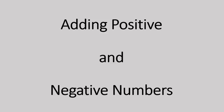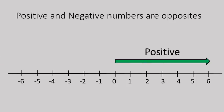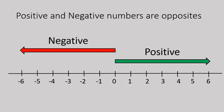Hello, this is Mr. Buffington, and in this lesson we are going to talk about adding positive and negative numbers. Positive and negative numbers are opposites. So a positive number will start at the zero and move to the right, while a negative number will start at the zero and move to the left on a number line. This is what it would look like.